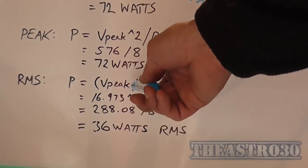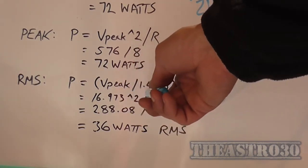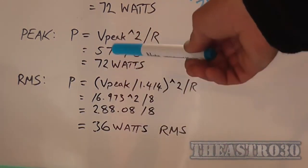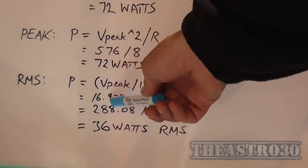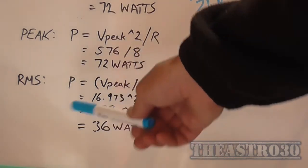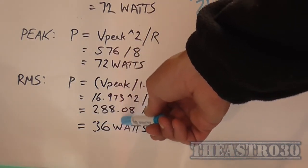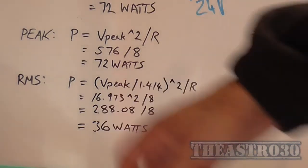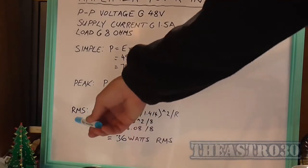So V peak divided by 1.414 is 16.973, which to the power of 2, or 16.973 times itself, is 288.08, divided by the resistance, which is 8, gives us 36 watts RMS.